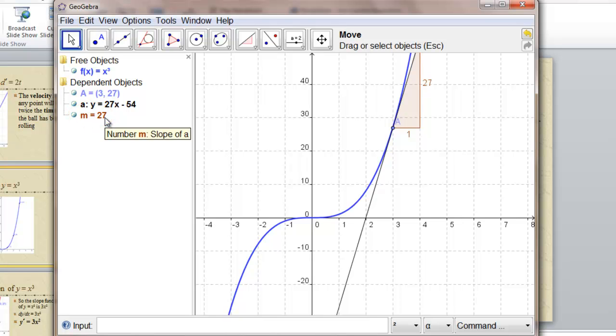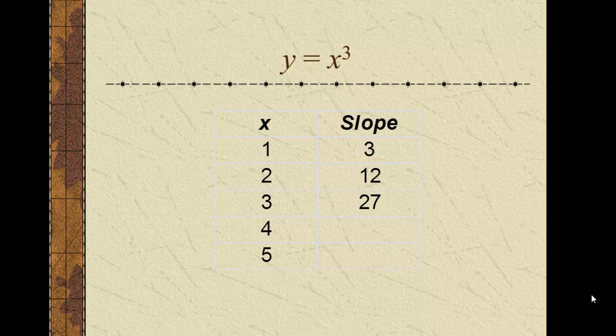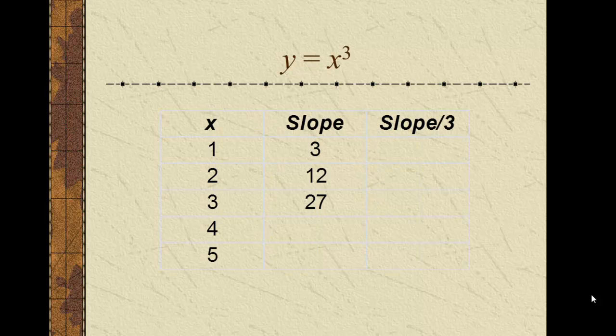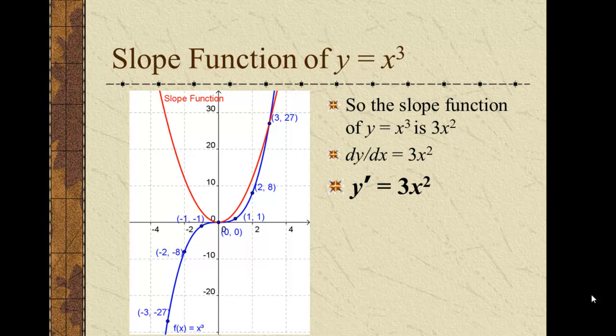I'm not seeing a simple pattern, so let's put those numbers into a table and play around with them. Now if you don't see a pattern right away, that's okay. Neither did I. I did notice that all the slopes were multiples of three. So what happens if we divide all the slopes by three? They become the square of the x value. The slope of the curve y equals x cubed is always three times the square of the x value. So the slope function of y equals x cubed is 3x squared. And all the different ways to write that in math, dy over dx is 3x squared, or y prime is 3x squared.